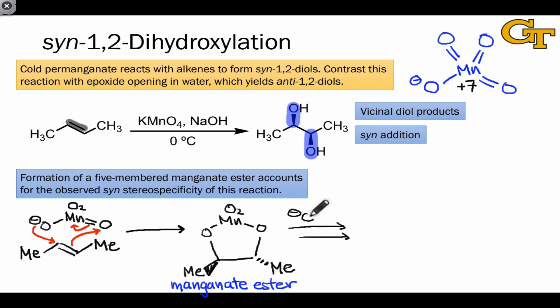Hydroxide base is needed to open this manganate ester and form the diol product. This occurs with retention of configuration so that the final vicinal diol product also contains a trans relationship between the methyl groups, which we found in the starting material as well. This reaction is syn stereospecific.